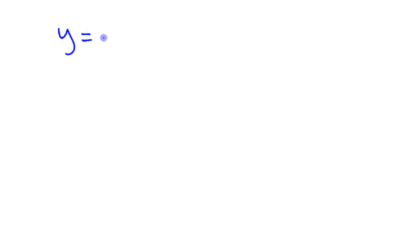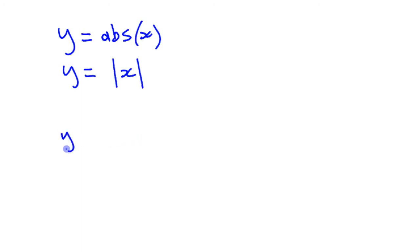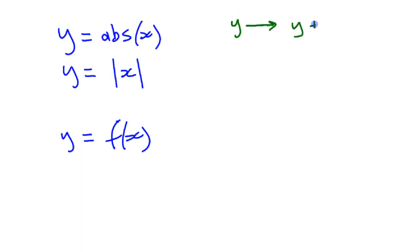Next we're going to look at what happens when you make a change to y in a function. We'll stick with that same absolute value function, but it's going to hold true for any function y equals f of x. Before we looked at changing the x; now we're going to look at replacing y instead, and what kind of changes that has — specifically replacing y with y plus k, some number like y plus 3 or y minus 4.